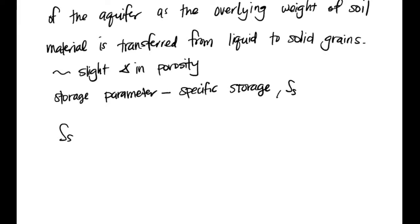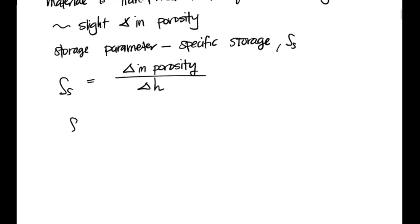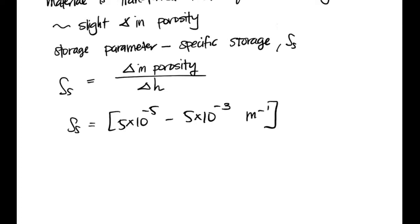S_s is considered the change in porosity divided by the change in piezometric head. Specific storage ranges from 5×10⁻⁵ to 5×10⁻³ per meter. So those are the storage parameters associated with the two different types of aquifers.